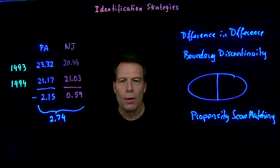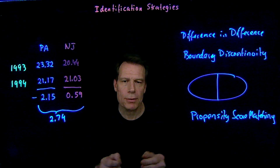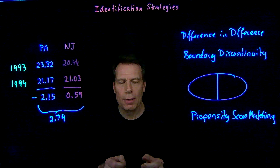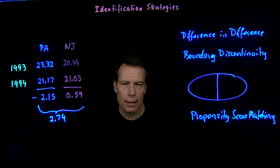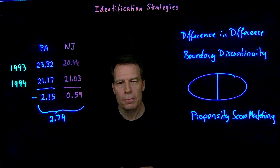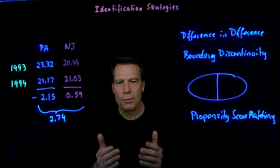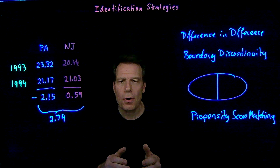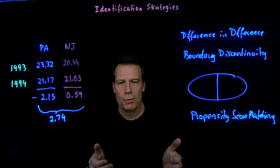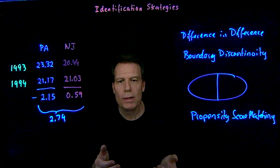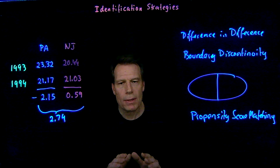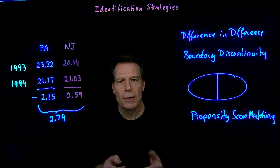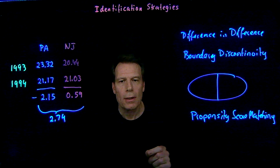Under propensity score matching, we only compare households that are similar in all observable ways. We compare outcomes of children who go to preschool versus those who don't from two-parent families with similar income and similar parental education levels. If we only compare like to like — adjusting for all possible differences — and the only remaining difference is that one family sent their kid to preschool and the other did not, we argue we've adjusted for confounders and are measuring only the causal effect of preschool on child outcomes.